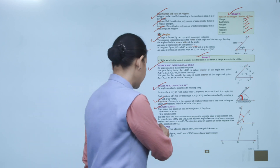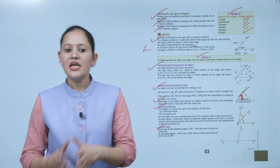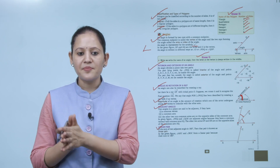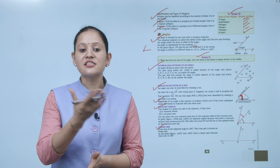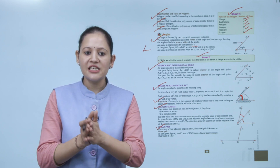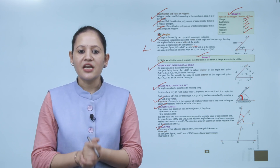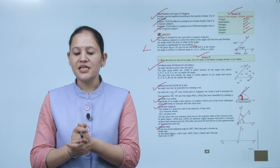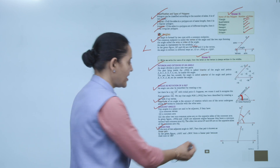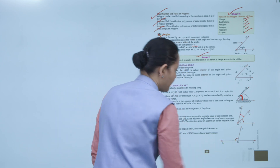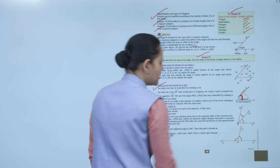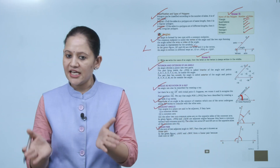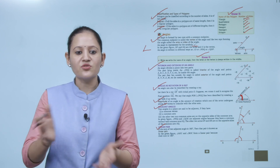Linear pair: if the sum of two adjacent angles is 180 degrees, they are known as a linear pair. In the figure, angles AOC and BOC form a linear pair because their sum is 180 degrees. They are adjacent and their sum is 180 degrees, so they are a linear pair.